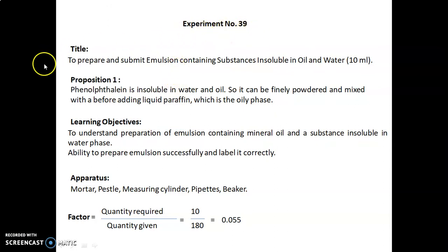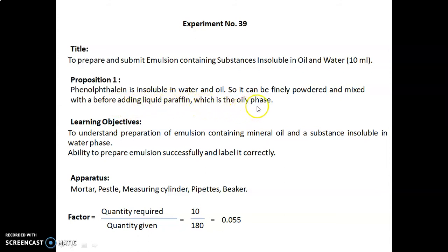Experiment number 39. The title is: to prepare and submit the emulsion containing substances insoluble in oil and water — 10 ml. Preposition 1: phenolphthalein is insoluble in water and oil, so it can be finely powdered and mixed with gum before adding liquid paraffin, which is the oily phase. Learning objectives are to understand the preparation of emulsion containing mineral oil and a substance insoluble in water phase, and the ability to prepare the emulsion successfully and label it correctly. Apparatus required: mortar, pestle, measuring cylinder, pipettes, beaker. The factor is calculated as quantity required upon quantity given, which equals 10 upon 180, that is 0.055.